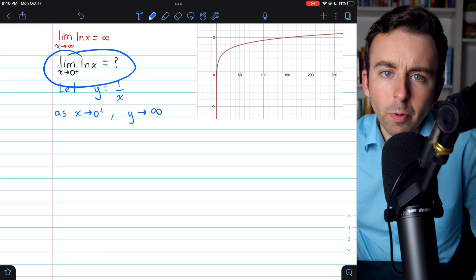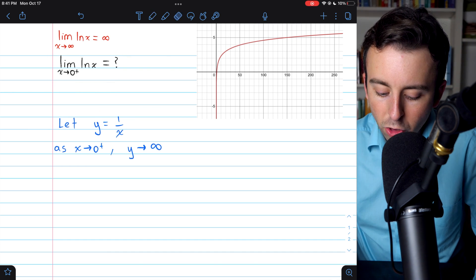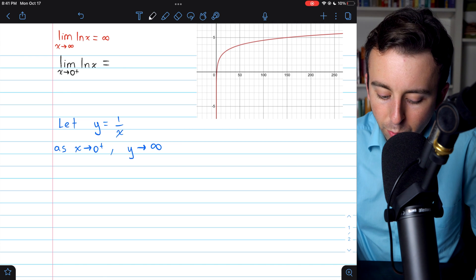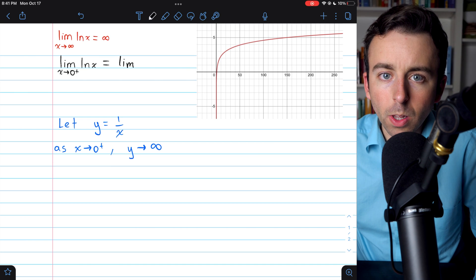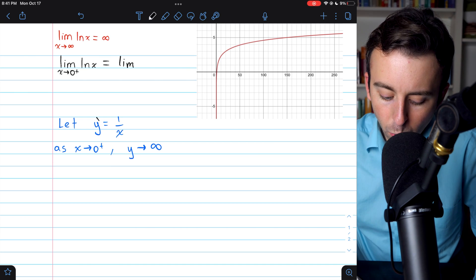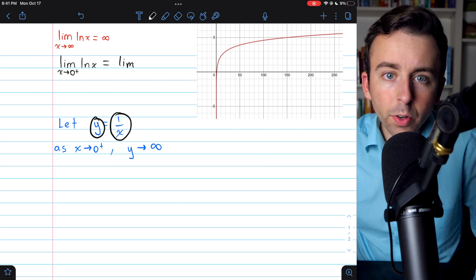Now we can start to rewrite this limit. Putting the original limit now in terms of y, it's the limit of what's natural log of x. Well, y is 1 over x.